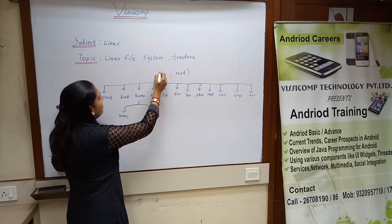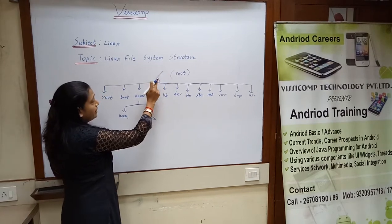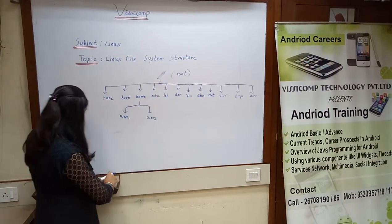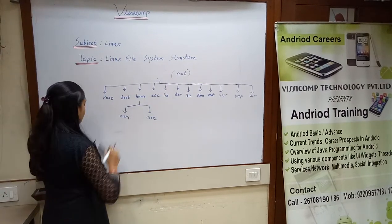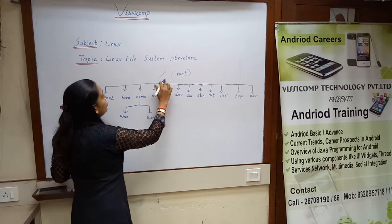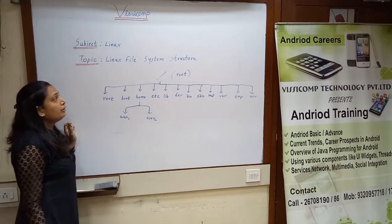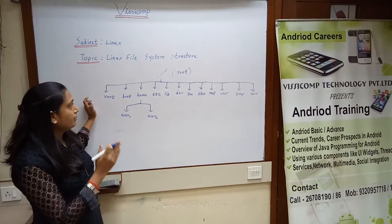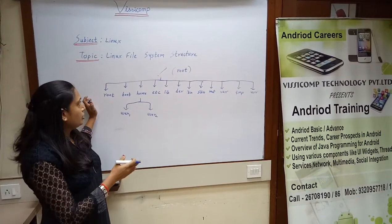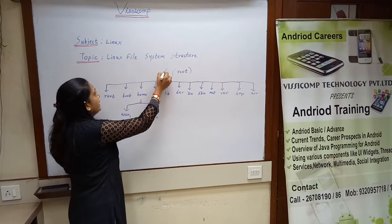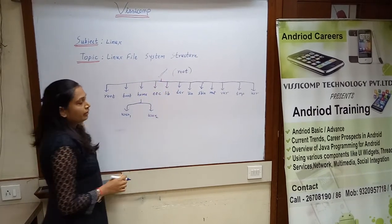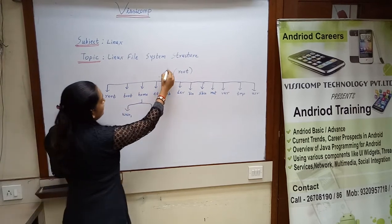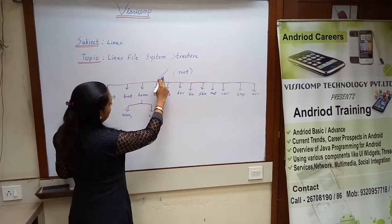At the top, there must be the root directory. This forward slash is known as the root directory. It is used for booting of the Linux Operating System. When there is any problem during installation, this directory must be there. And all subdirectories are there under this root directory.